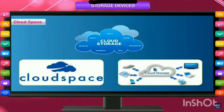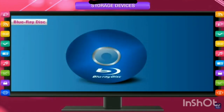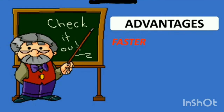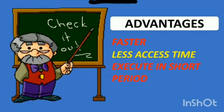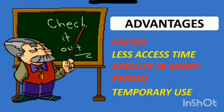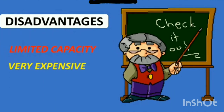Next comes Google Drive, which is known for cloud space. Google Drive can be used to store information and you can retrieve that information from anywhere in the world if you are using the internet online. Next is Blu-ray disk. The advantages of these storage devices are that they are faster, have less access time, execute in a very short period, and are temporarily used. The disadvantages are that they have limited capacity and are very expensive.